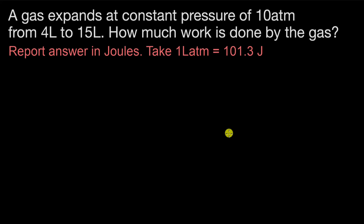Let's solve a couple of questions on work done in PV diagrams. The first one: a gas expands at constant pressure of 10 atm from 4 liters to 15 liters. How much work is done by the gas? We need to report the answer in joules.